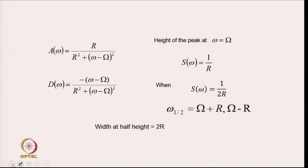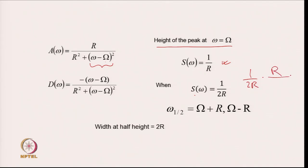Some important facts about absorption and dispersion peaks: if you take the height of the peak at omega equal to capital Omega, then A(omega) will be 1 by R. If omega equals capital Omega, then that part is zero, and A(omega) equals R divided by R squared, which is 1 by R. If S(omega) equals 1 by 2R, then A(omega) equals 1 by 2R, which equals R divided by R squared plus (omega minus capital Omega) squared.